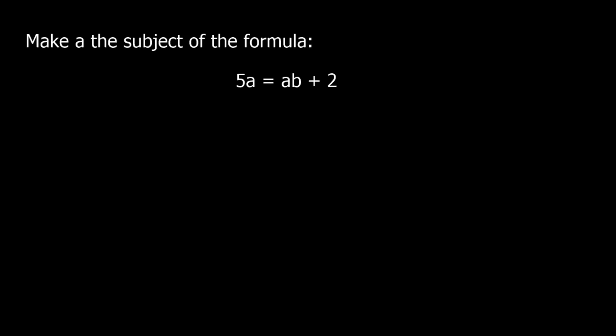In this video we're going to look at harder changing the subject of the formula questions. Here I've got a question: make 'a' the subject of the formula, that means get it in the form 'a equals'. We've got 5a equals ab plus 2, so I've got a's in two terms. I need to get them on the same side as the first step.